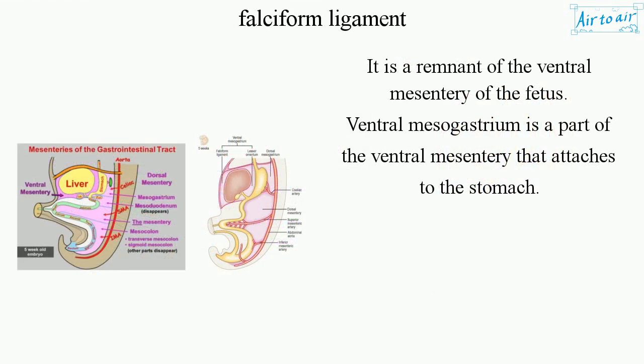It is a remnant of the ventral mesentery of the fetus. The ventral mesogastrium is a part of the ventral mesentery that attaches to the stomach.